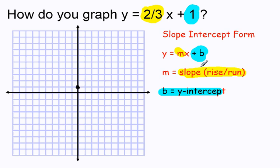Then I'm going to follow my slope, which is 2 over 3, which means every time I go up 1, 2, I go over 1, 2, 3. Up 1, 2, over 1, 2, 3.